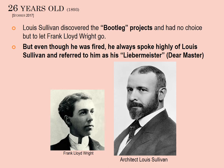Louis Sullivan finds out about these bootleg projects and is forced to let Frank Lloyd Wright go. It's sometimes argued that Sullivan must have known about these houses since they were all very close together near his home and studio. However, this is a big firm — Sullivan has a partner, Adler, and employees — and they needed to let Wright go because of this breach of contract to work only on the firm's clients' houses and designs. But Frank Lloyd Wright always referred to Louis Sullivan throughout his life as his Liebermeister, his dear master.